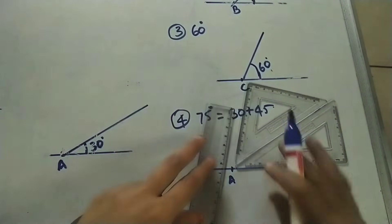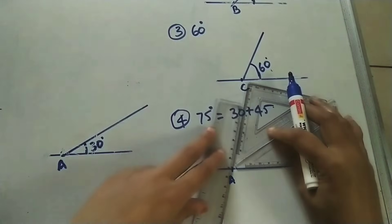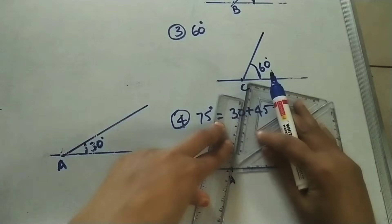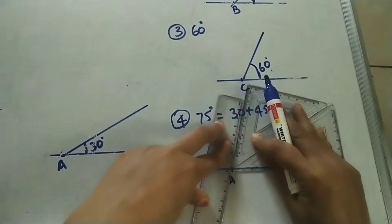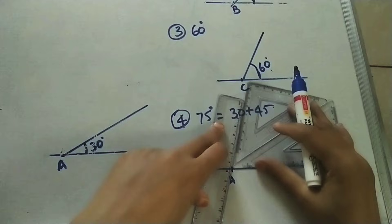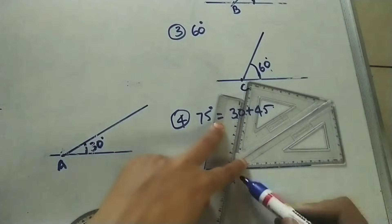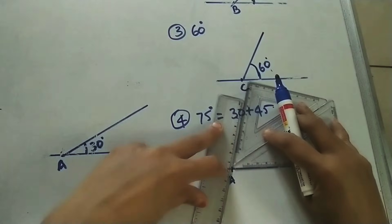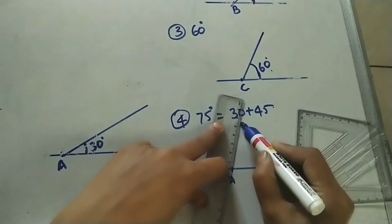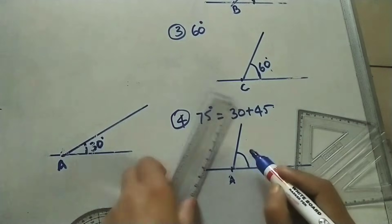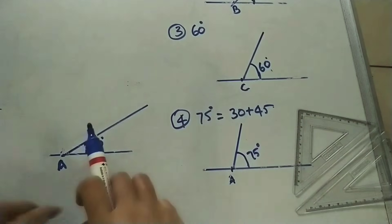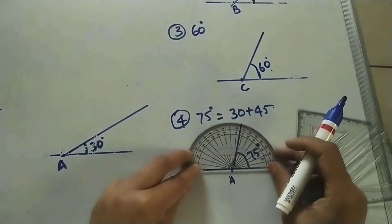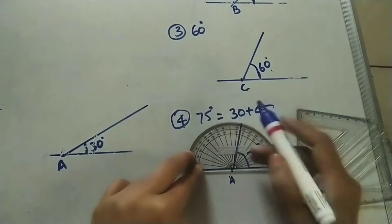Coincide the base side with the line, then slide the entire arrangement so the combined slope passes through the point. Remove the set squares and draw the line — it is making 75 degrees. Check: this angle is between 70 and 80, so it is 75 degrees.